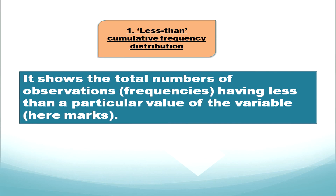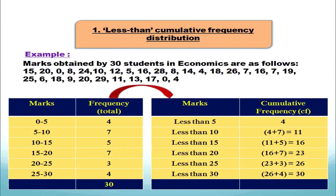Less than cumulative frequency distribution shows the total number of observations — that is, frequencies — having less than a particular value of the variable. To construct it, it is always advisable to first construct an exclusive series, then convert it. You can also directly construct from raw data, but that requires higher-level analysis.